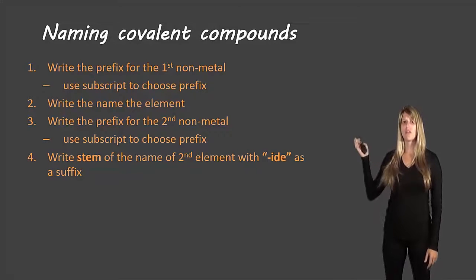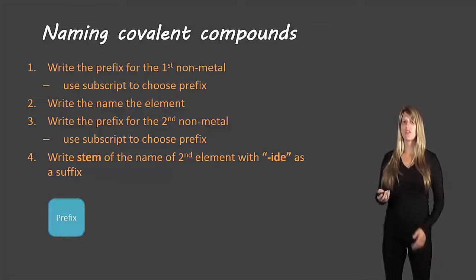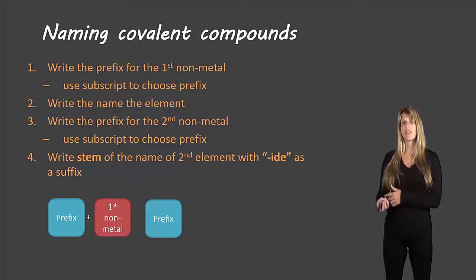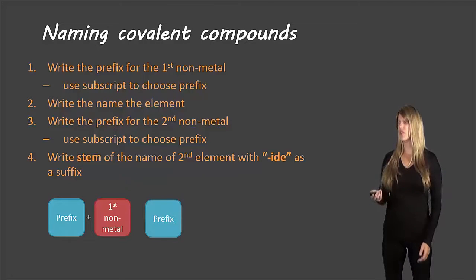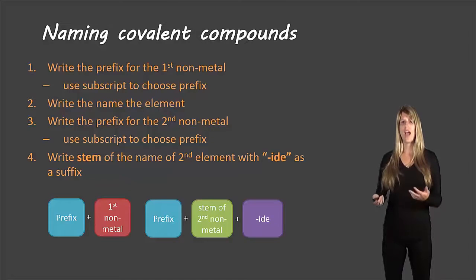Here are the rules. I'm going to go through the diagram. You start off by writing the prefix for the first non-metal, using the subscript from the formula to decide what the prefix will be. You then write the name of the first non-metal. Then write the prefix for the second non-metal, again using the subscript to determine it. Finally, write the stem of the name of the second non-metal with -IDE as a suffix. We add -IDE to indicate that we're dealing with a compound.